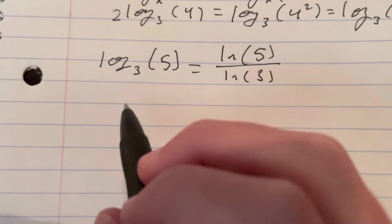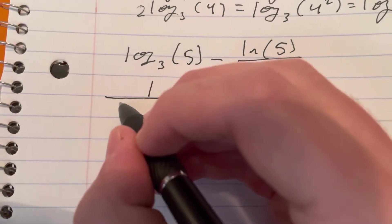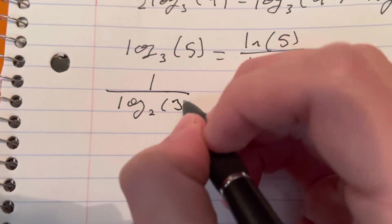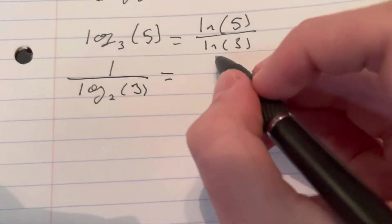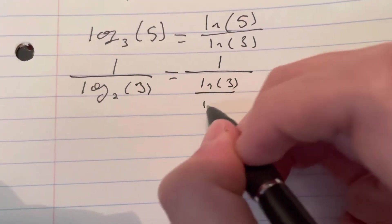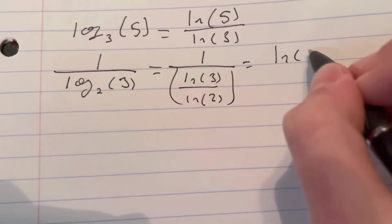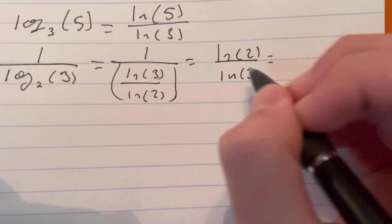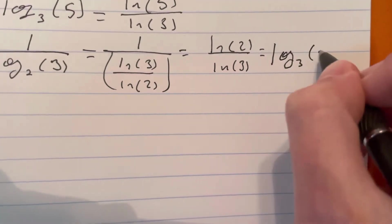This should also show us something. Let's say we have log base 2 of 3. Now, 1 over log base 2 of 3 is the same as 1 over natural log of 3 over natural log of 2. But then that's the same as natural log of 2 over natural log of 3.